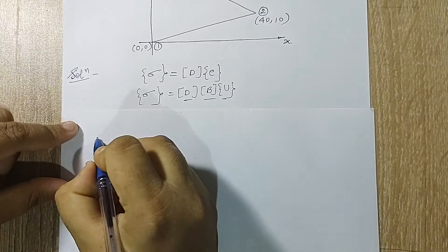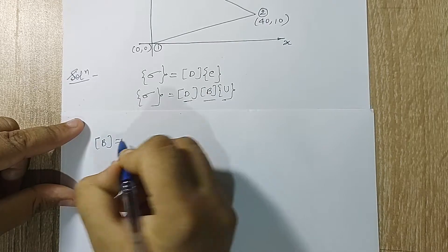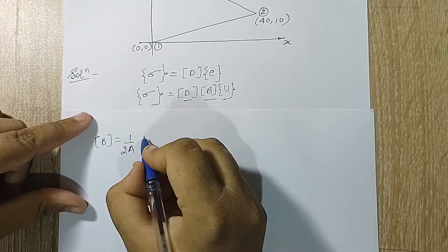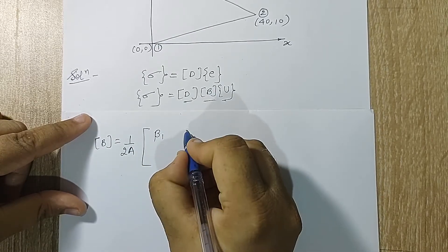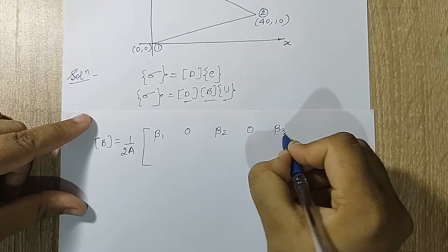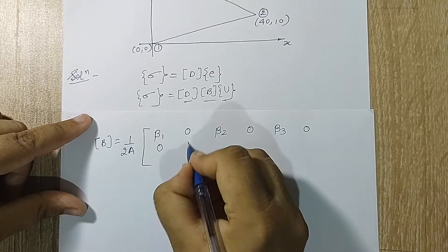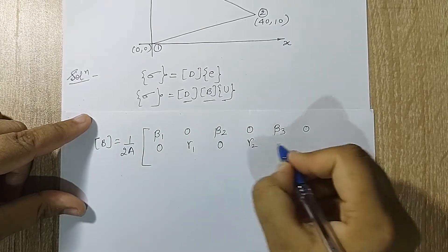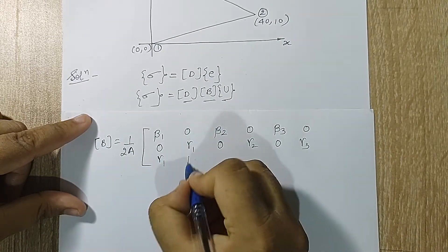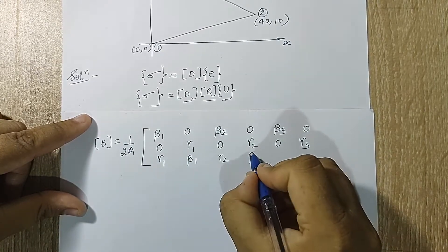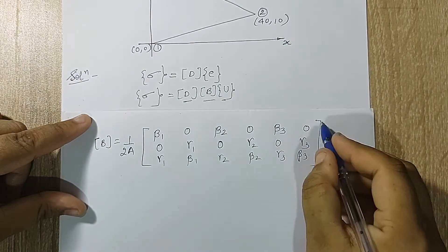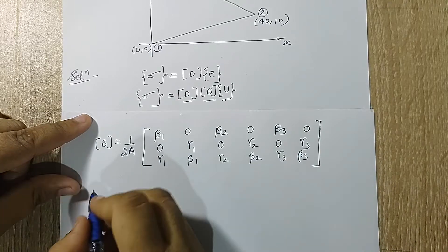Next I will calculate matrix B. The formula is 1/(2A) times the matrix [beta1, 0, beta2, 0, beta3, 0; 0, gamma1, 0, gamma2, 0, gamma3; gamma1, beta1, gamma2, beta2, gamma3, beta3]. I need to calculate these beta and gamma values.